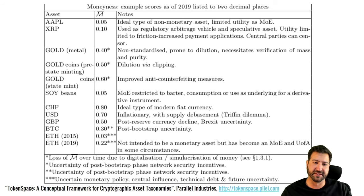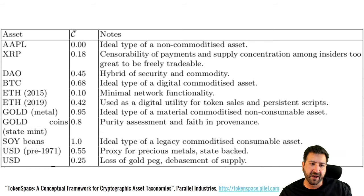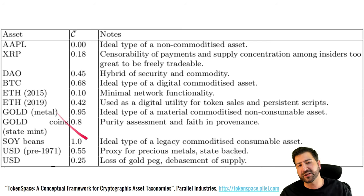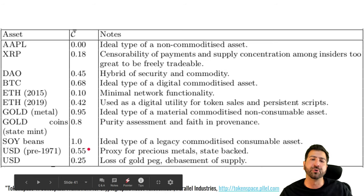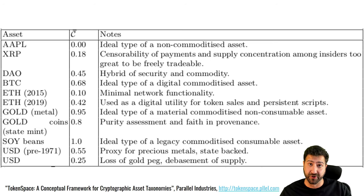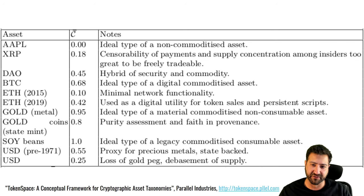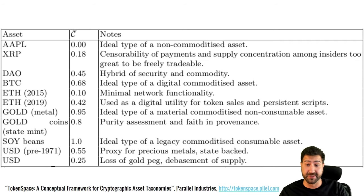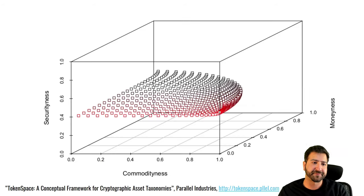Commodity-ness scores are probably quite a lot higher than the money-ness ones in general, especially for cryptocurrencies. I tried to distinguish between pre-Bretton Woods and post-Bretton Woods USD. Pre-Bretton Woods, under the gold standard, fiat currency was directly redeemable for underlying collateral — the gold in Fort Knox. That's gone now, so USD has less commodity-ness than before. You could also argue that no state money remains commodity money.